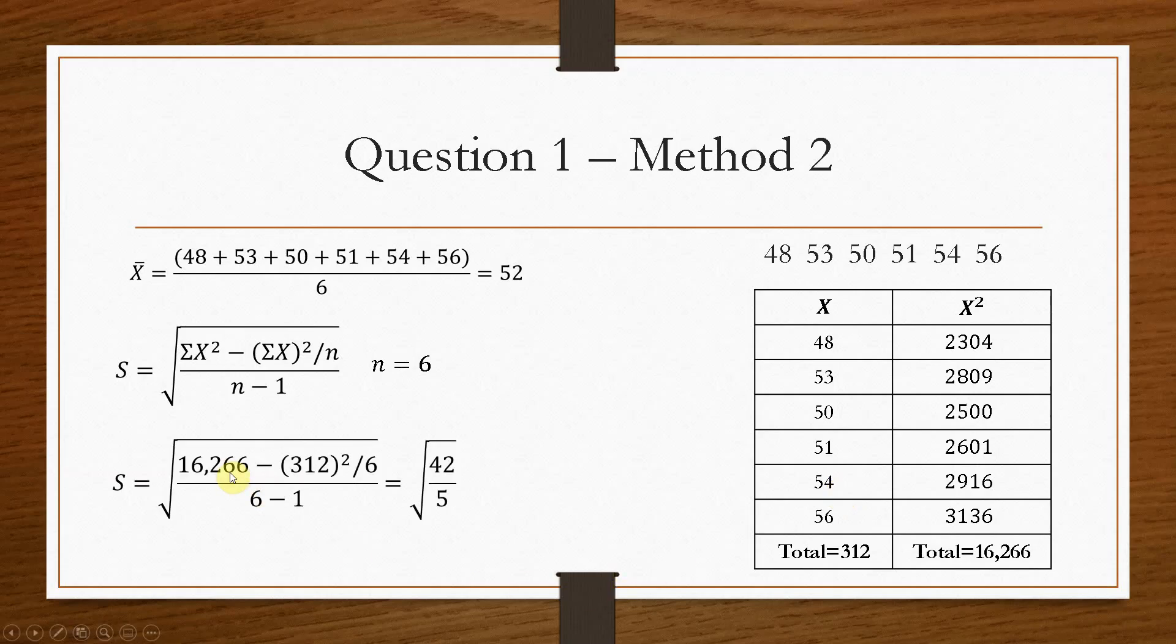312 is the summation of the x values, and we have to square that. That's the only bit you have to be careful of. And then divide it by 6. And then all of that divided by 6 minus 1. And that will give us 2.9, just like the first one.